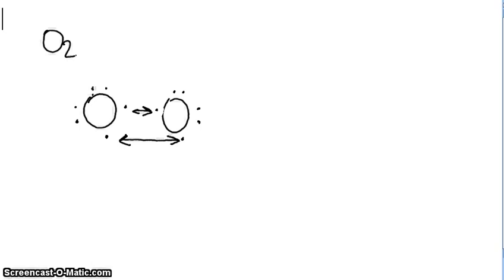And so now we'll do a covalent bond example. A covalent bond would be CH4. For hydrogen, it only has the one electron in its first energy level. For carbon, it has two electrons in its first energy level, and four electrons in its second energy level.